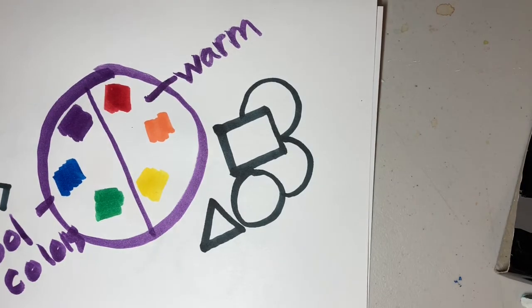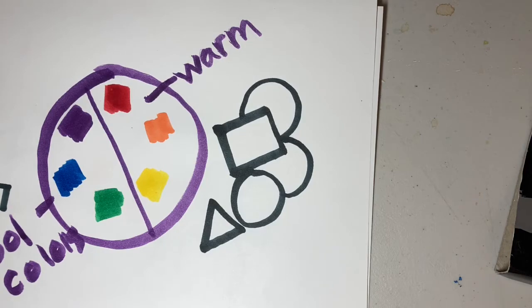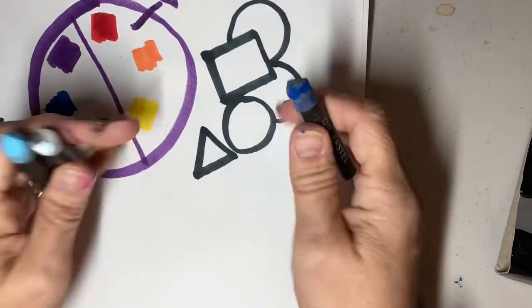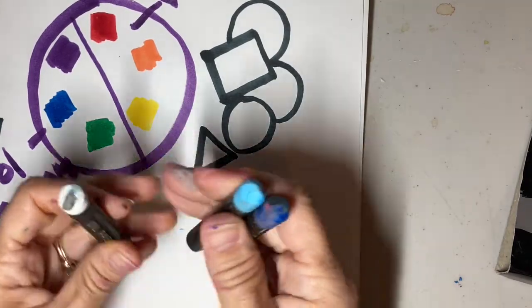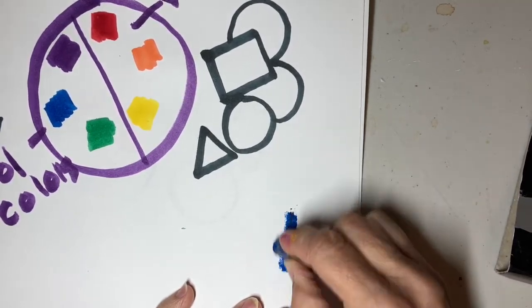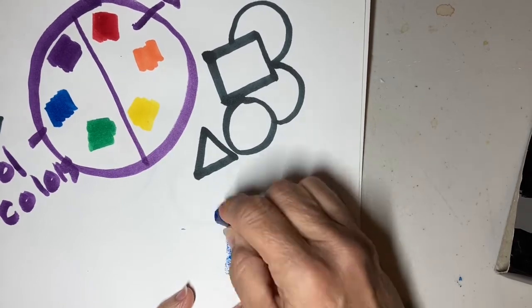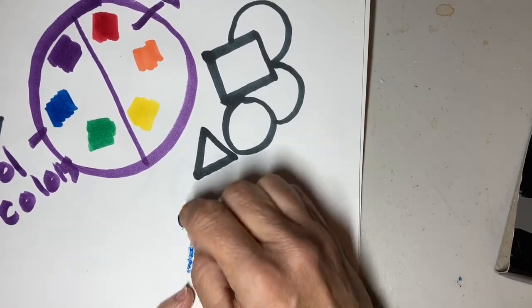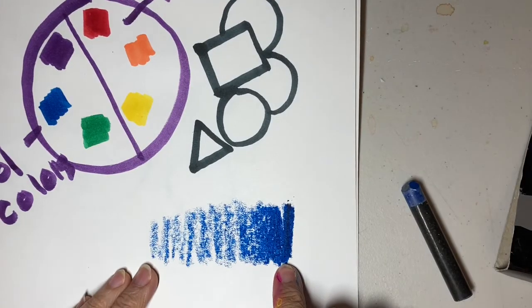All right. And the last thing we're going to talk about is value. Value is how light or how dark a color is. So I have two different shades of blue, and then I have some white. So I'm going to start with my darkest shade of blue, and I'm going to use less and less pressure on it. I'm going to get lighter and lighter, and you can see that it's dark here and light here.